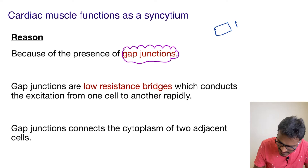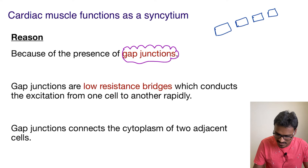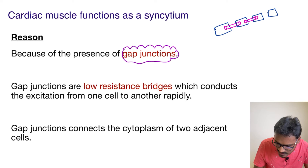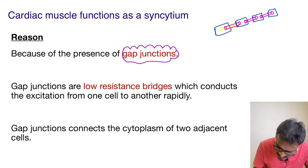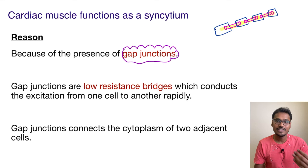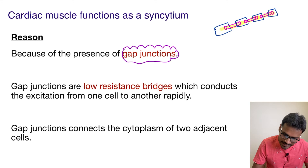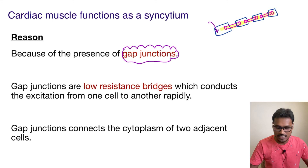Whenever there is a cell — let's say these are cardiac cells lying next to each other — they have something called gap junctions. These gap junctions connect one cell to another, and they act like low-resistance bridges. It is said that gap junctions connect the cytoplasm of both cells, so think of it as two cells whose cytoplasm itself is connected.